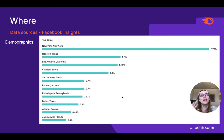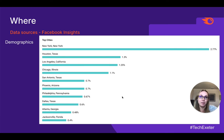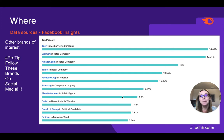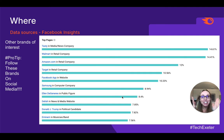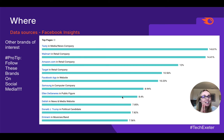Facebook Insights also gives us great breakdowns of geographic location, so we can start to use their terminology and speak like them when creating social media content. But here's the best part about Facebook Insights: we get to see what our audience is interested in outside of us. And that's huge, because we're dealing with human beings who are naturally interested in multiple things and lots of brands.